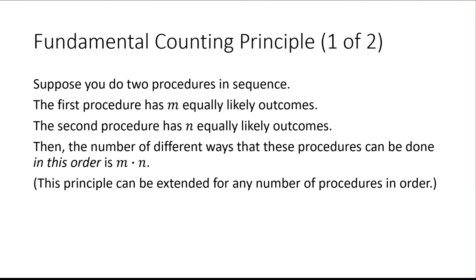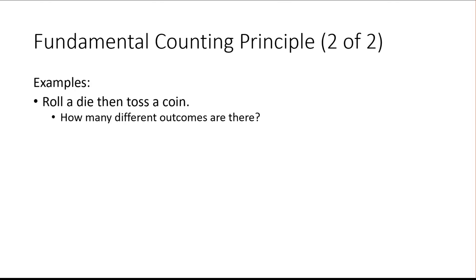Writing out the sample space is often a good first step, but sometimes problems have a gigantic sample space and you don't necessarily need to write out every possibility — it's important to know how many possibilities there are. That's where the fundamental counting principle comes in: if the first event has m total possibilities and the second has n different outcomes, then the total number of possibilities is m times n. For example, if you roll a die and then toss a coin, you have 6 possibilities for the die and 2 for the coin, so the total combinations would be 6 times 2, which is 12.